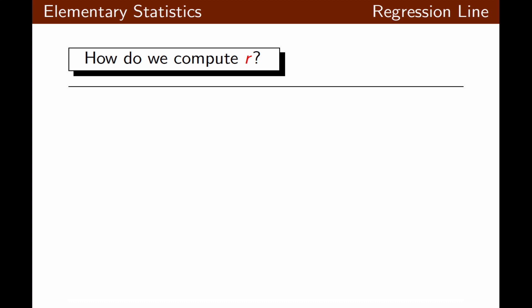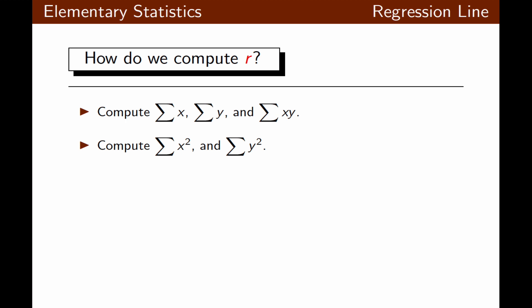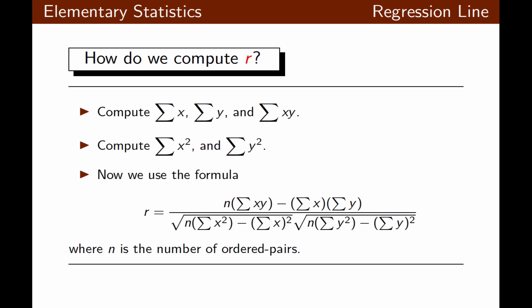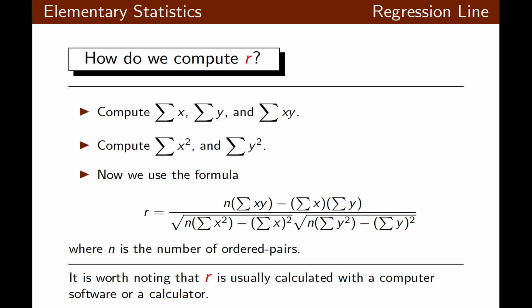How do we compute r? Once again, we find the summation of x, summation of y, summation of xy, summation of x squared, and summation of y squared. Then we use the formula for r, which looks complex. In this formula, n is the number of ordered pairs in the sample. Usually r is calculated with computer software or a calculator.